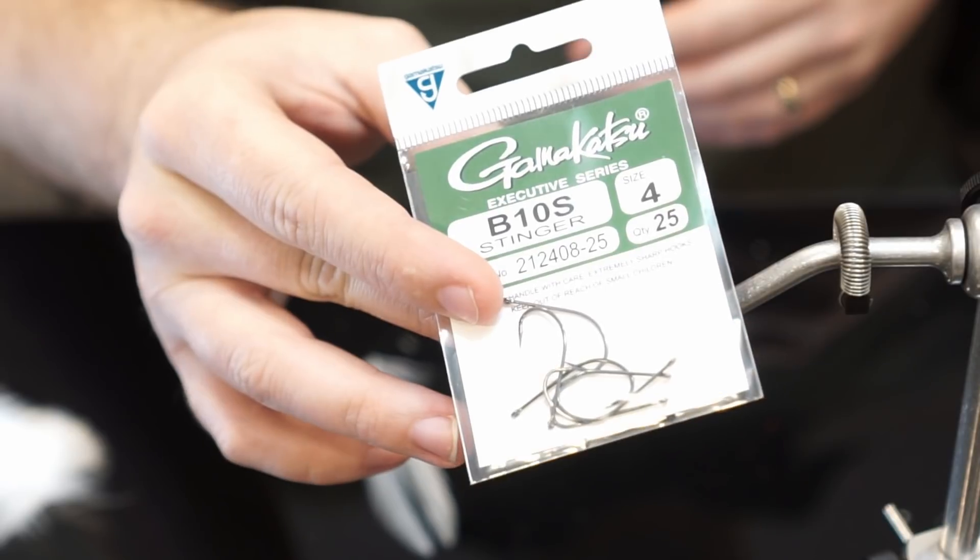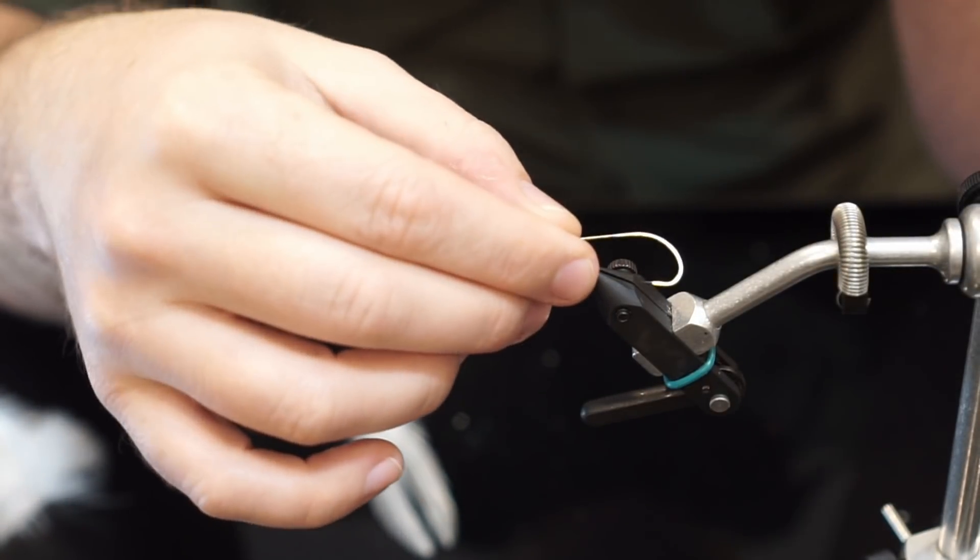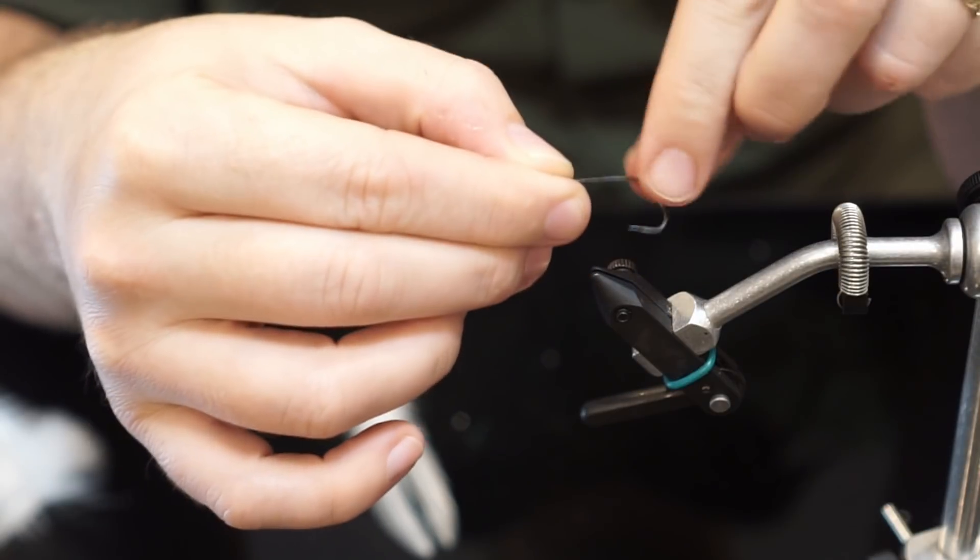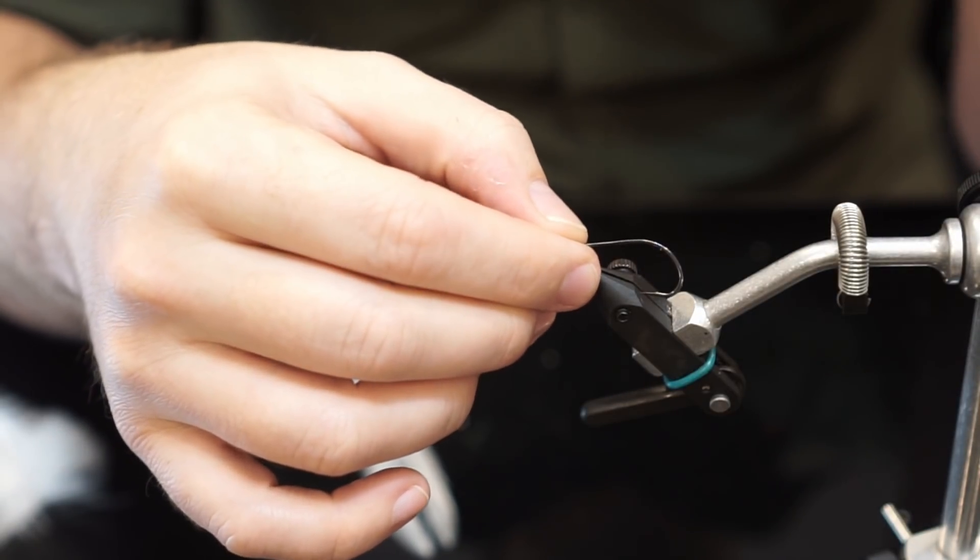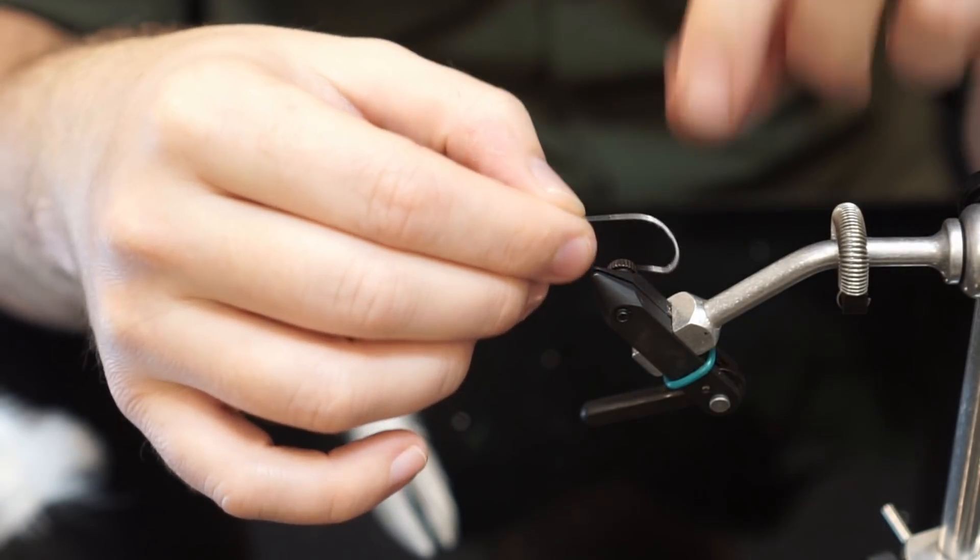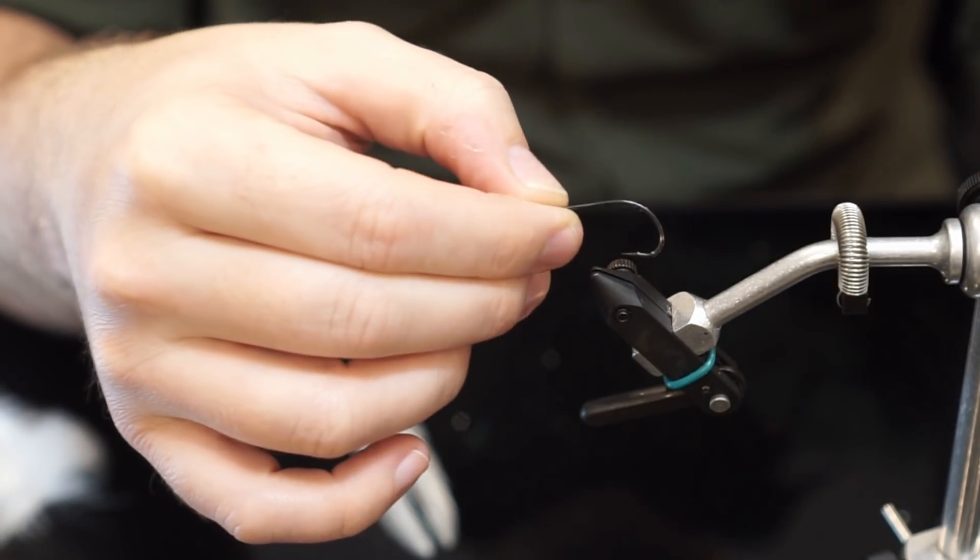So the first thing we're going to do is we're going to use a Gamagatsu B10S size 4. That's maybe a little bit of a light wire for this pattern, it's good if you also tie it on like a saltwater hook, something with a slightly thicker wire than this, but I want to tie this particular fly today a little bit lighter than I normally do.